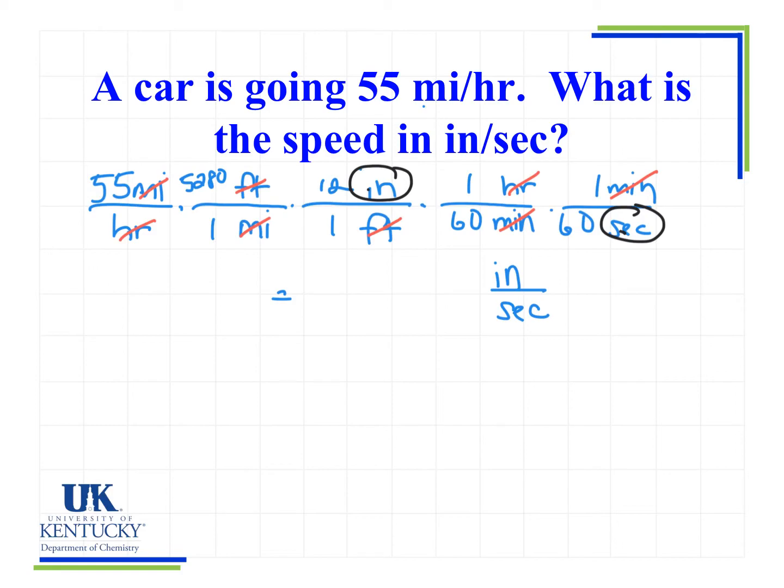So now all that's left to do is do the calculation. So I have 55 times 5,280 times 12 divided by 60 divided by 60 and I end up with 968 inches per second.